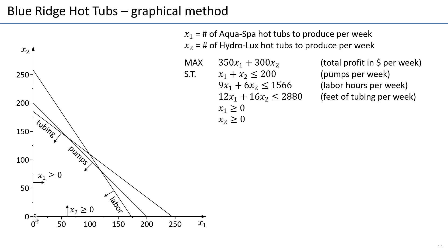There is the labour line going all the way up there, and there is the tubing line. The non-negativities are the axis lines: x1 greater than or equal to 0 is this vertical line, where x1 equals 0, and to the right of it x1 is greater. Similarly, x2 greater than or equal to 0 is the x1 axis, where x2 equals 0 and above the line x2 is greater. Now the question is which points satisfy all those constraints, and I hope you can see that the region inside will be the feasible region.